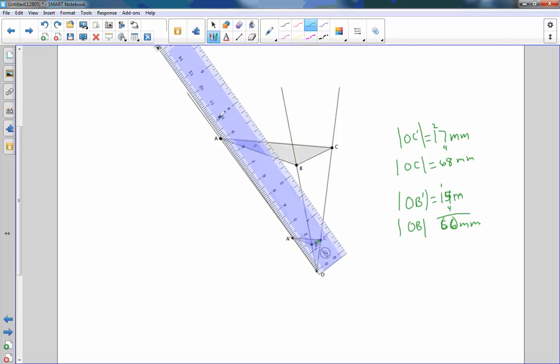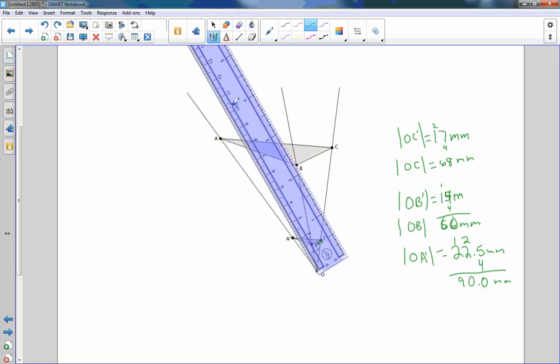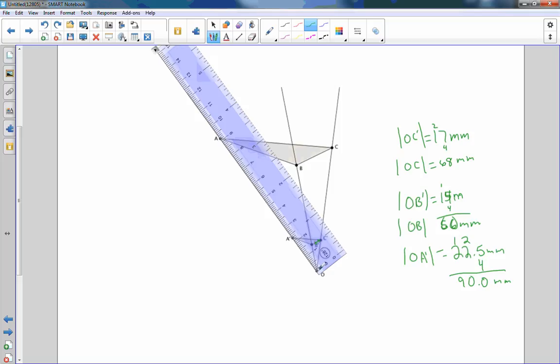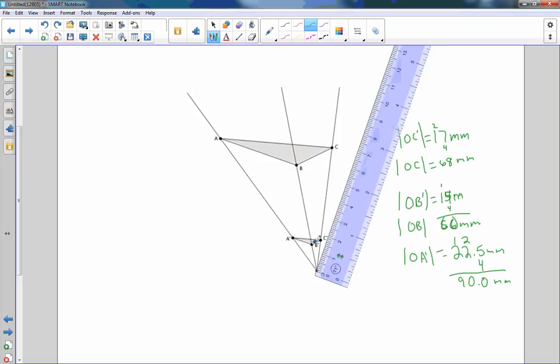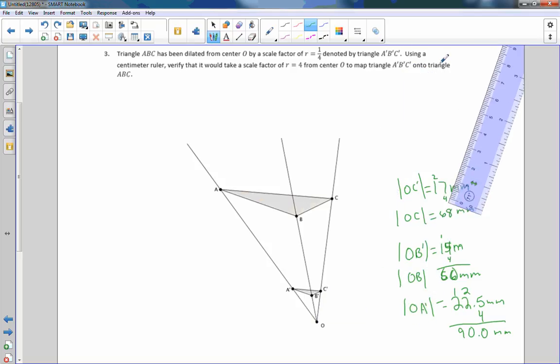If I'm going to scale it up by a factor of 4, then 4 times 14 should give me 56 millimeters for the length of OB. The distance from O to B should be 56 millimeters. And then finally, if I come over to here and measure OA prime, and I look at this measurement, it looks like 22.5 millimeters. If I factor that up by a scale of 4, I should get 90 millimeters. And if I bring this around, it should come out right around the 9. And there it is. This is close enough to prove that if I multiply a scale factor of 1/4 back up 4 times, I get back to my original.